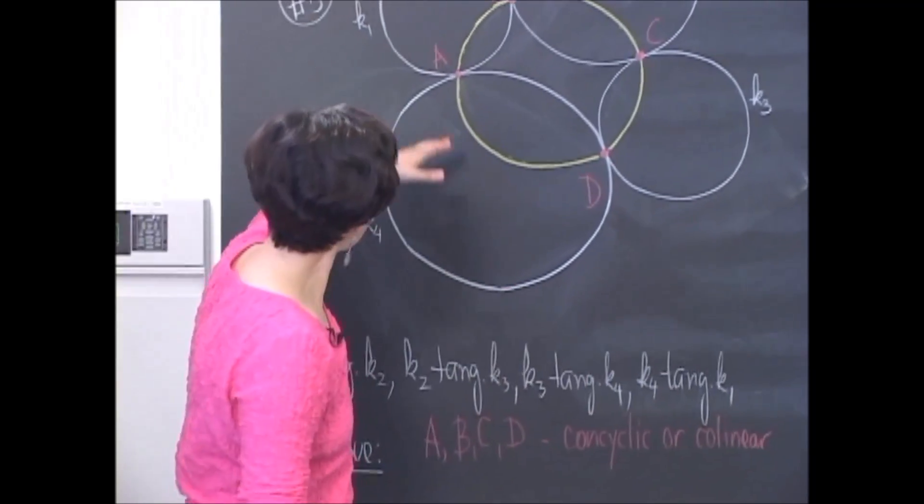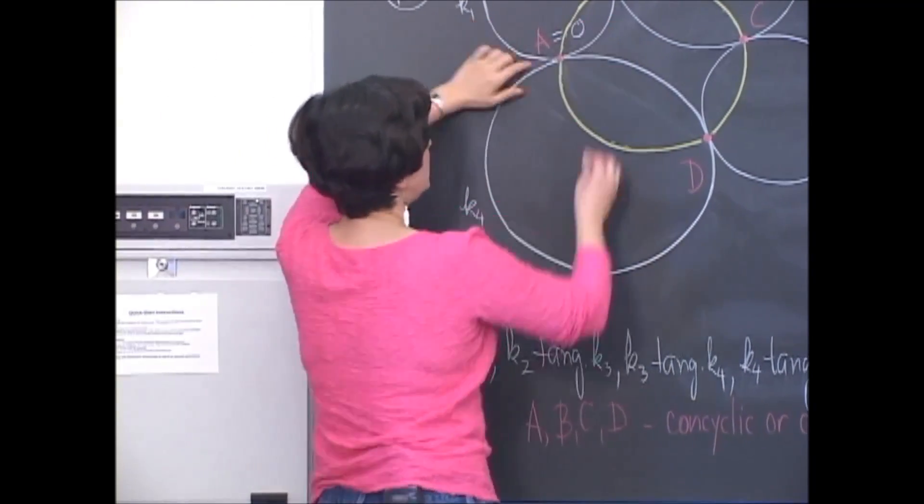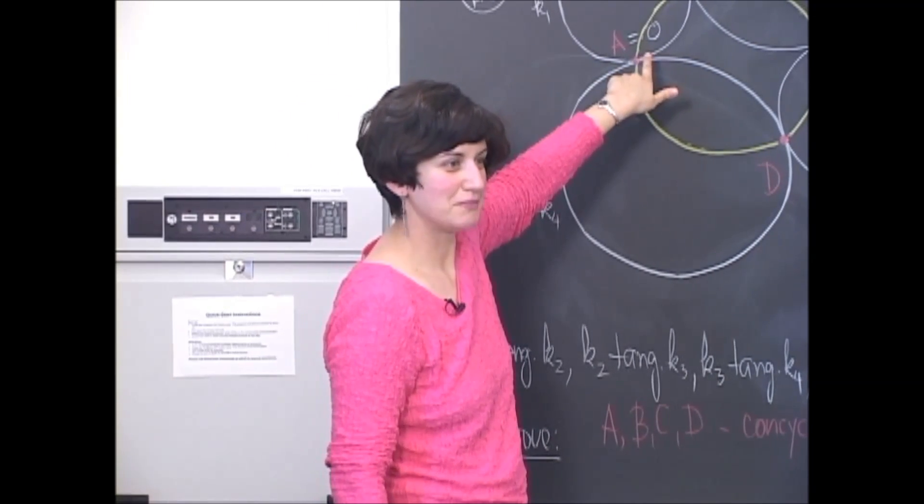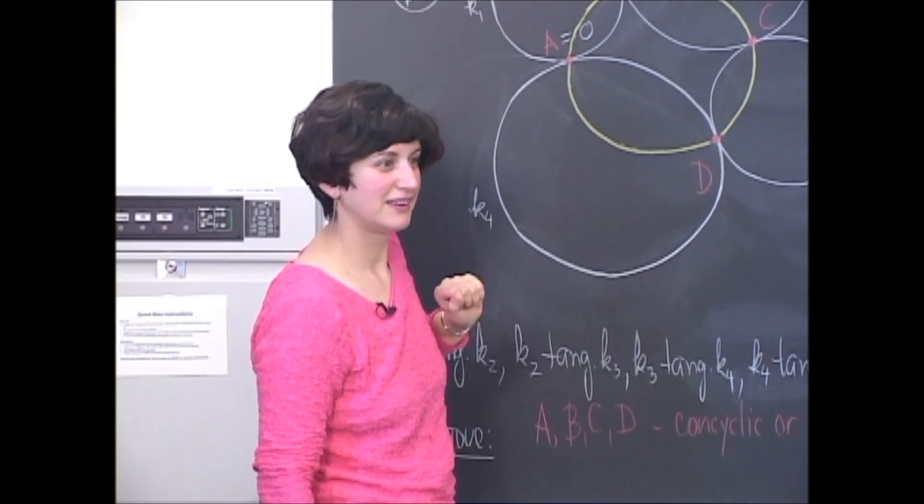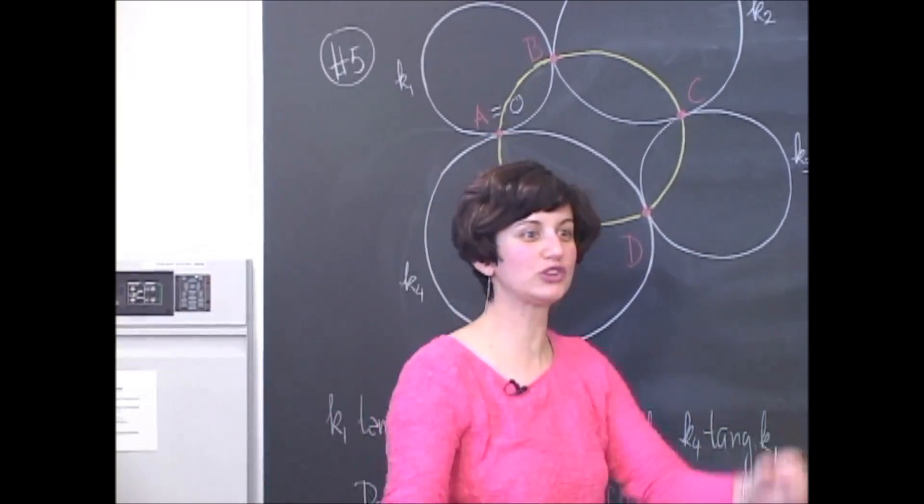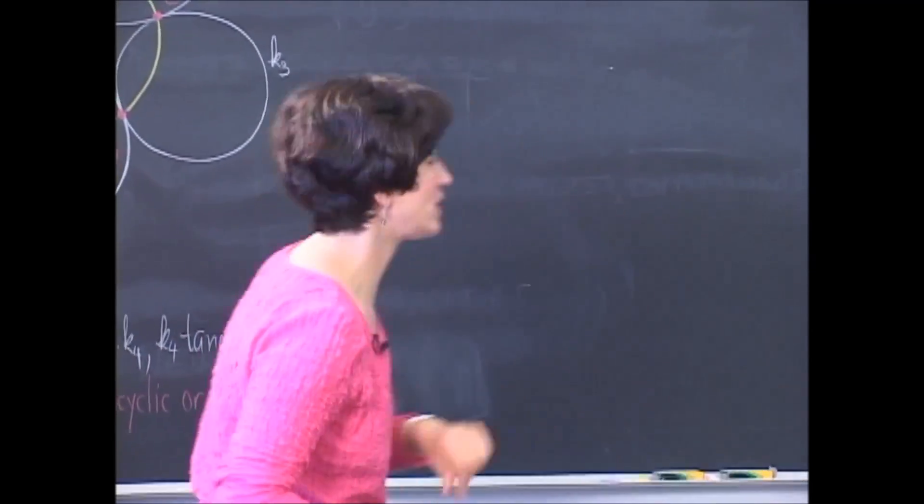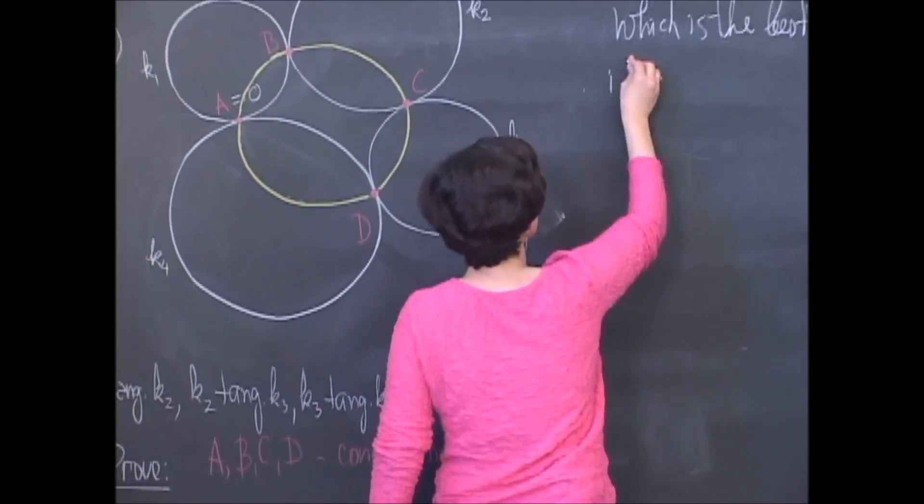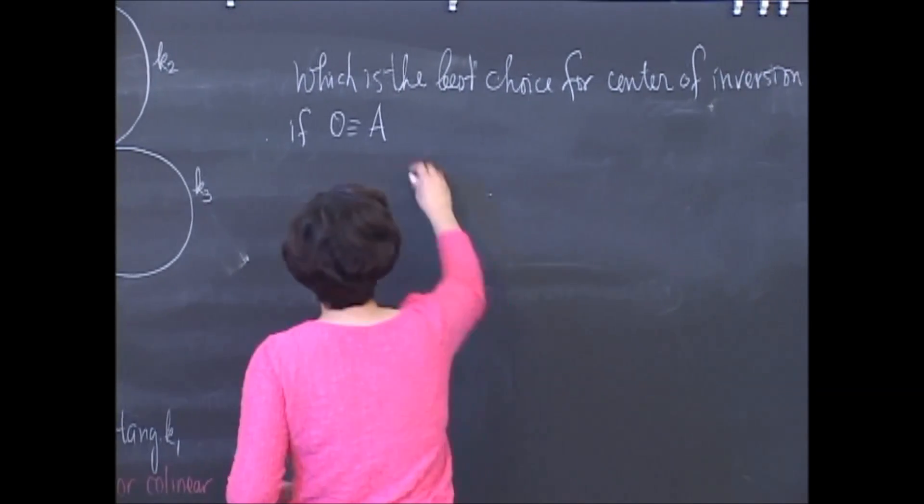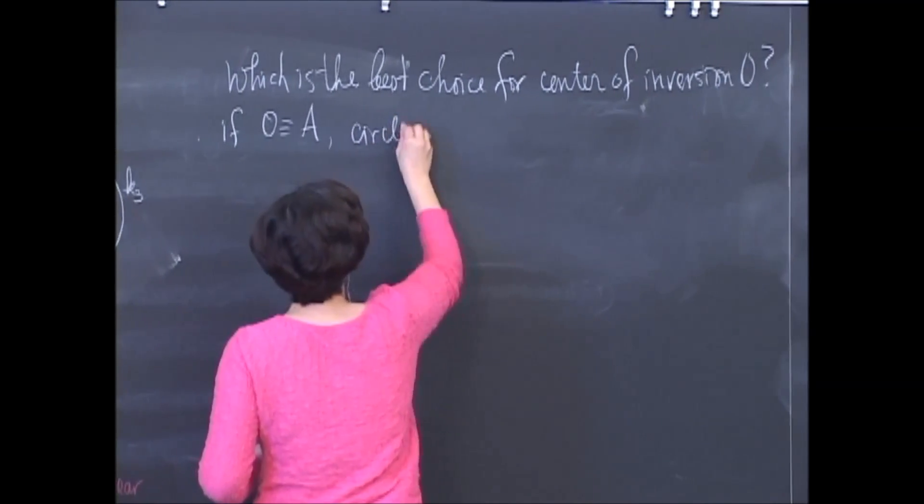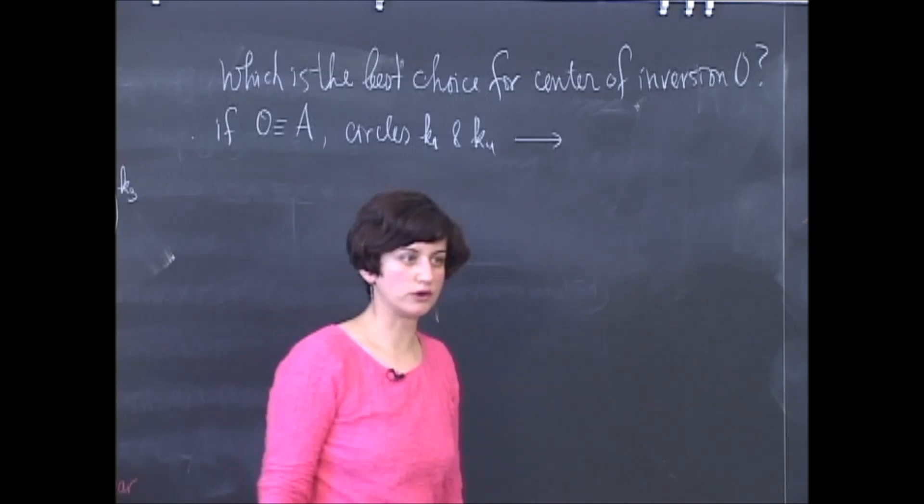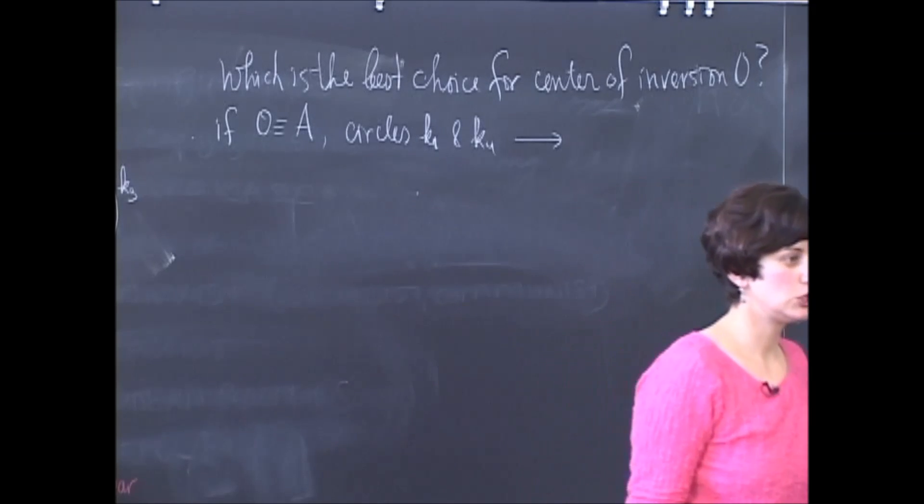Because what would happen after inversion if I say let O be point A? Which circles will be killed, basically? Will be transformed? K1 and K4. K1 and K4 would turn into lines, right? Let's write this down. If O coincides with point A, for example, circles K1 and K4 will be transformed into lines.